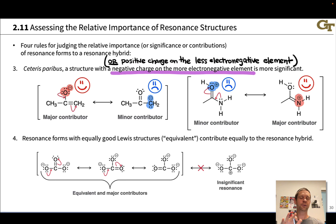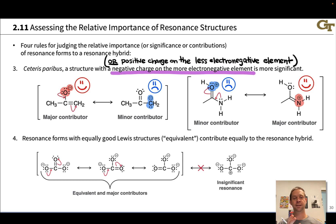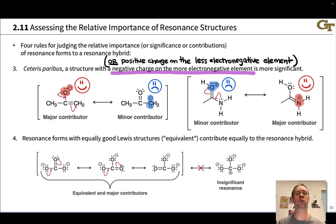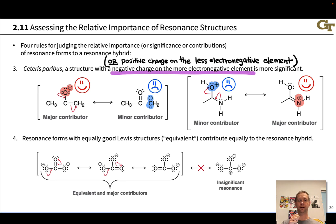Rule number four: resonance forms that are perfectly superimposable are what we call equivalent — they're equally good, and they contribute equally to the resonance hybrid. Even though they may show charges at different specific atoms, we can rotate one around to perfectly superimpose them. In that case, the resonance forms are equivalent and contribute equally to the resonance hybrid.